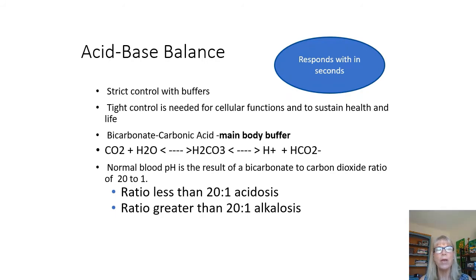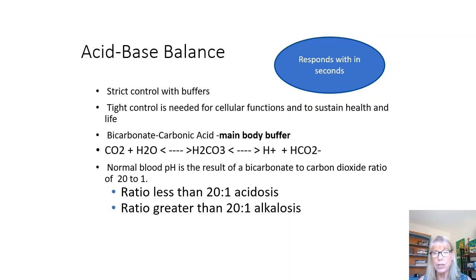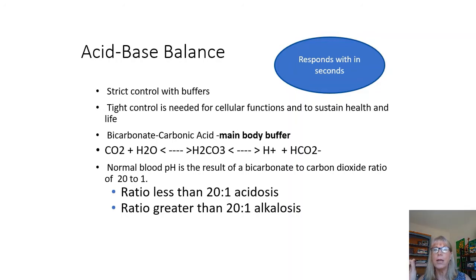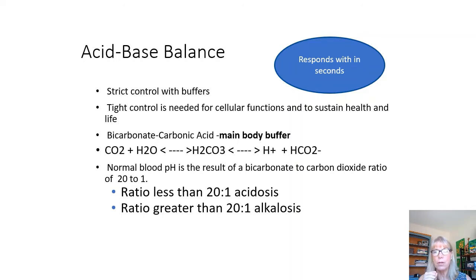Let's talk about how the body buffers and keeps the pH in a very narrow range of 7.35 to 7.45. Our first acid-base buffering system is the bicarb-carbonic acid equation. The byproducts of metabolism, which are CO2 and water, are on one side of the equation. Then you have carbonic acid in the middle, and then you have hydrogen ion and bicarbonate. At all times your body is moving this equation back and forth to keep the pH in that really strict range.